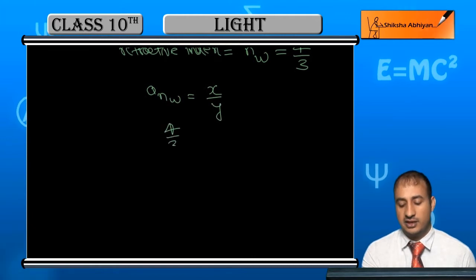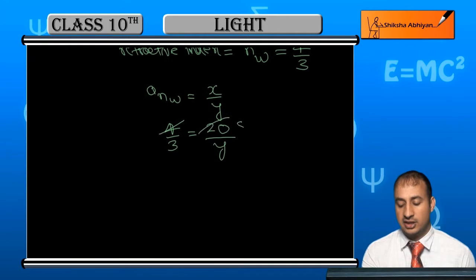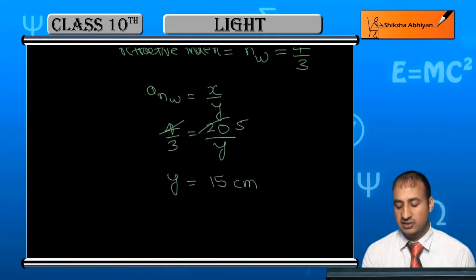So refractive index value is 4 by 3, which equals 20 upon y. After canceling, y is equal to 15 cm. So the apparent depth is 15 cm.